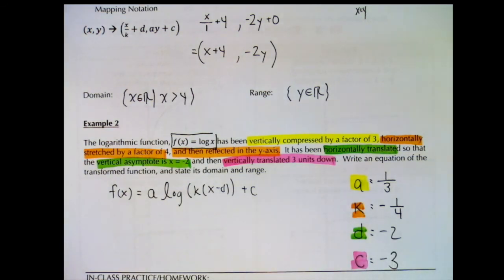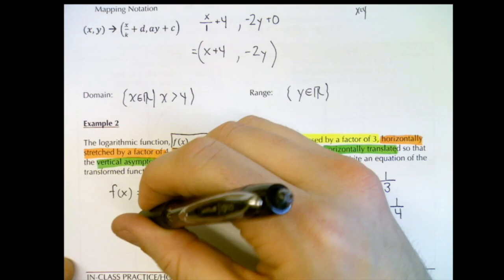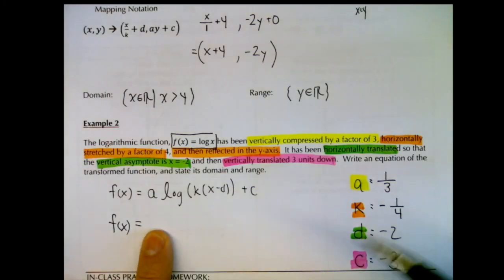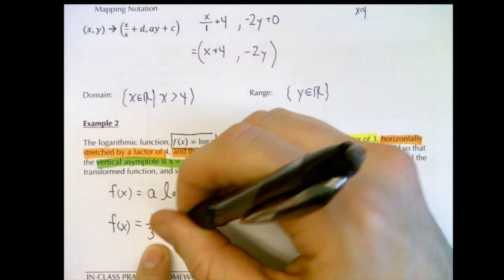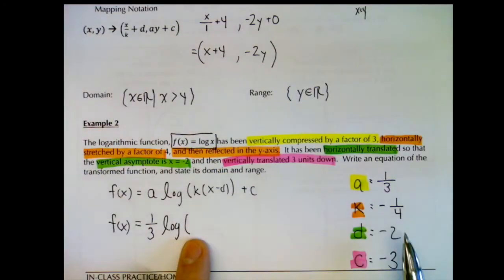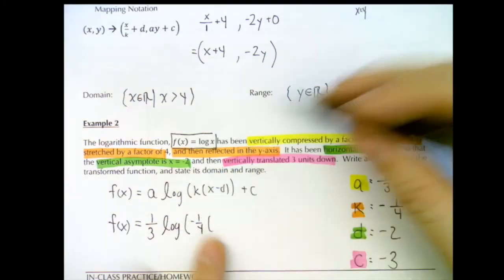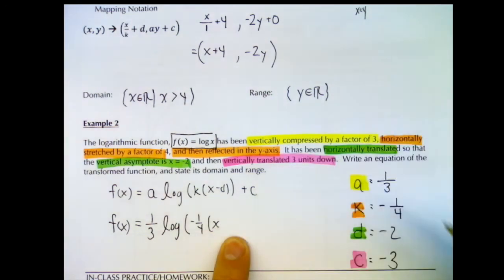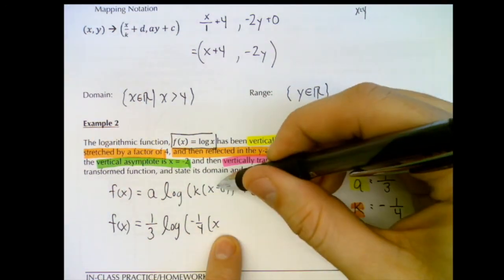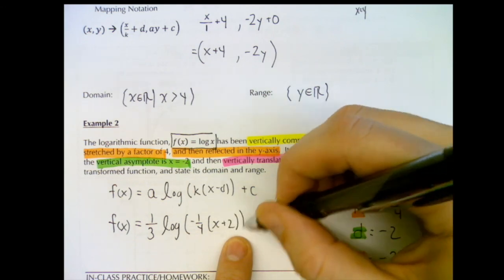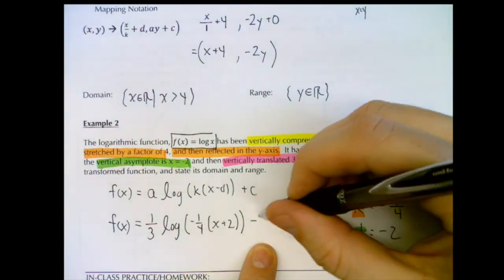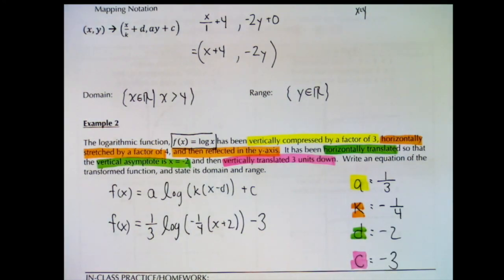Now we rewrite the equation filling in a, k, c, and d. f(x) equals one third times log of bracket negative one quarter times (x plus 2) close bracket, minus 3. Remember to common-factor inside the bracket so d is clearly visible: d is negative 2 which changes sign to give plus 2. That's our complete transformed equation. Transformations work exactly the same way as in previous lessons — just with a new parent function: log with any base. That's it for lesson 8.2.